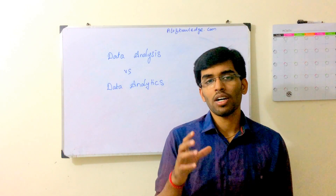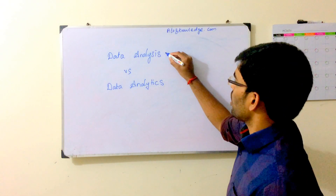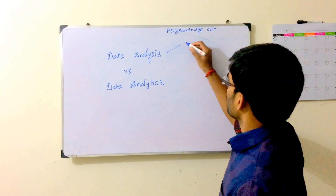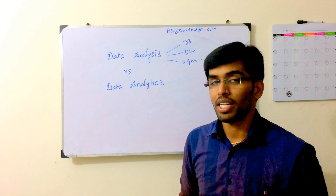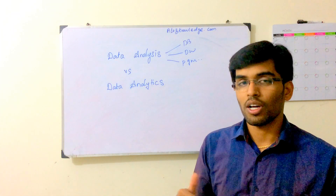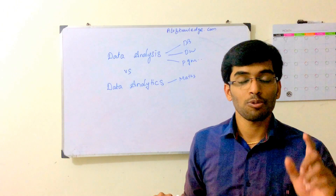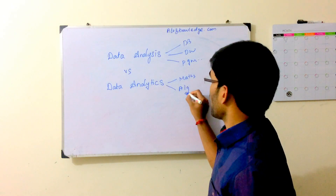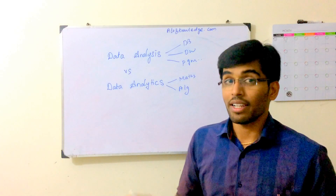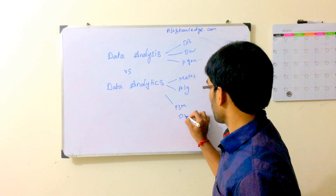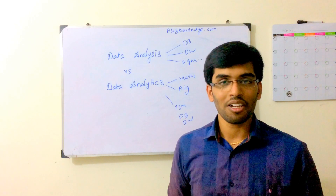What skill sets do people need for data analysis versus data analytics and data science? If you are a data analyst, you need to be strong in databases, data warehouses, and some programming languages. But if you want to be a data scientist, you need to be very strong in mathematics — that is the top priority — then good in algorithms, implementing your mathematical knowledge in an algorithmic way. Programming languages and databases come as the next priority.